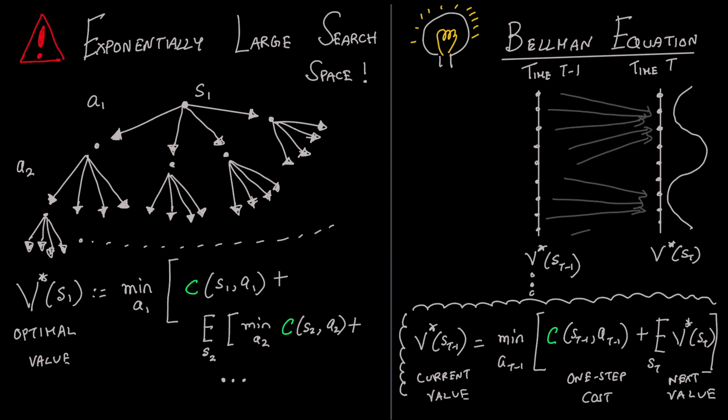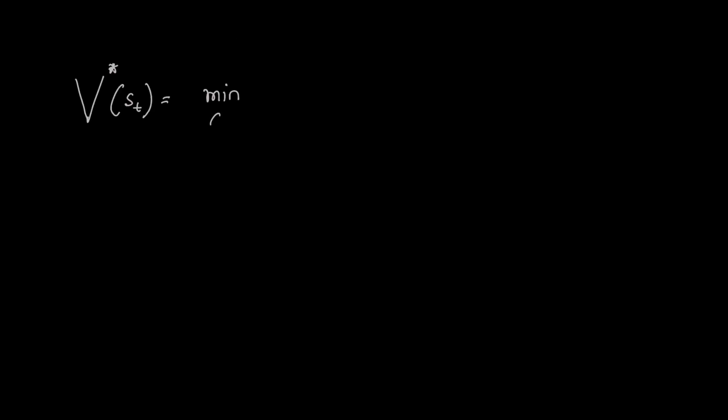We repeat this for t minus two and so on. This way, the complexity drops from exponential to linear in time. All of decision making boils down to solving this fundamental equation, the Bellman equation, to find the optimal value and subsequently the optimal policy.